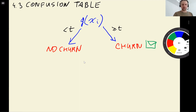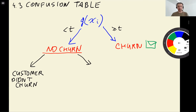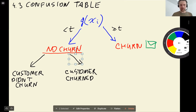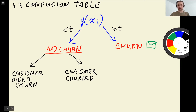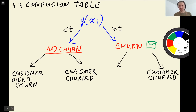There are four possible outcomes. If our model score is below 0.5, our prediction is not churn. What can happen is that the customer indeed didn't churn — a correct decision — or we predict not churn but the customer did actually churn, which is an error. Similarly, we can predict churn and the customer actually churns, or we predict churn but they do not churn.